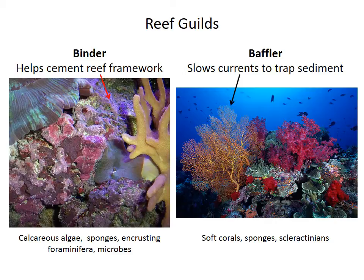The bafflers, because they're these large fan-like structures, block and interrupt and slow down the water currents. When the water moves more slowly, it is unable to transport as much sediment, and so the sediment will rain out and accumulate in depressions on the reef. That sediment can then be grown over by constructors or binders, and this all helps the reef grow upwards.